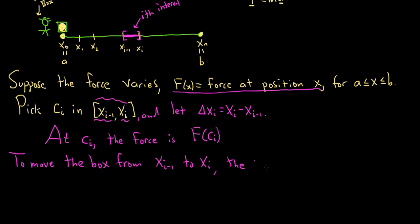The work is, well, we actually don't know what the work is, and here's why. So the work, which I'll call w sub i, so it's like a little increment of work, is approximately equal to the force at c sub i times the distance that we've traveled. So we've traveled the length of the entire subinterval, so delta x sub i. So it's really important to understand why this is an approximation, because the force varies.